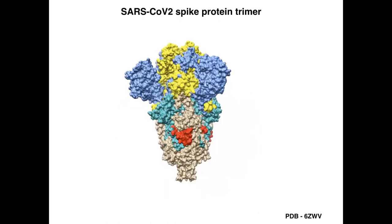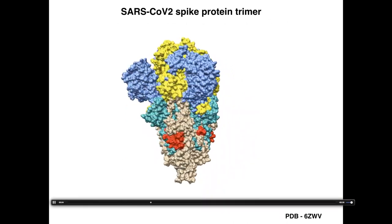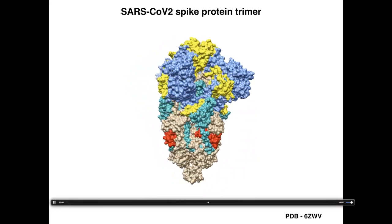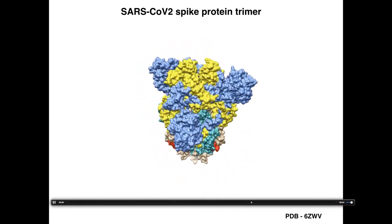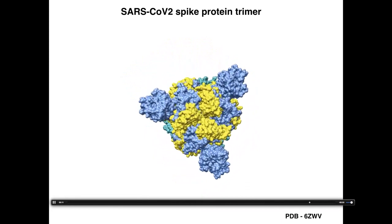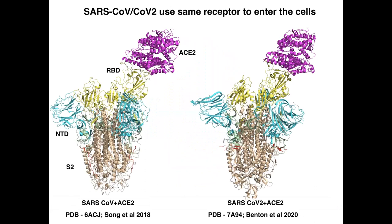The spike protein of SARS-CoV-2 is a trimer and it looks like this. The region at the bottom is essential for the fusion of the viral membrane with the host, and the region at the top is essential for binding of the spike protein to the cell surface receptors — in particular, the region colored in yellow.